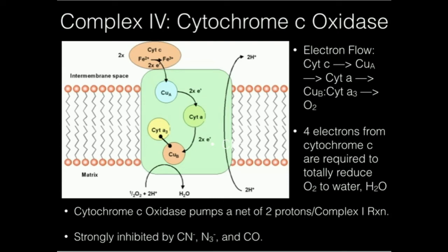So, in other words, if I inhibit complex four, the whole thing shuts down. If I inhibit complex three, the whole thing shuts down. If I inhibit complex two, complex one, again, the whole thing shuts down. The entire functionality of the respiratory chain is dependent on all of them working in tandem with each other.